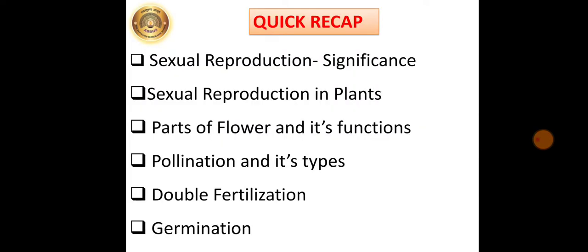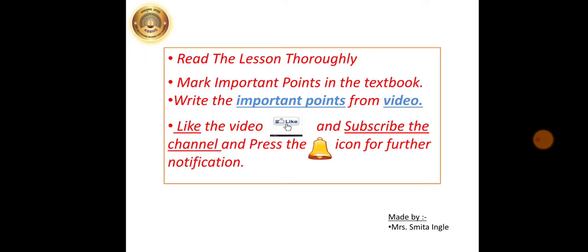Just have a quick recap. What we have learnt today? We have learnt about sexual reproduction, its significance. Sexual reproduction in plants. We have learnt about the parts of flower and its functions. Pollination and its types. What is meant by double fertilization. And germination. Read the lesson thoroughly. Mark the important points in the notebook. Write the important points from the video as well as from the textbook. Thank you.